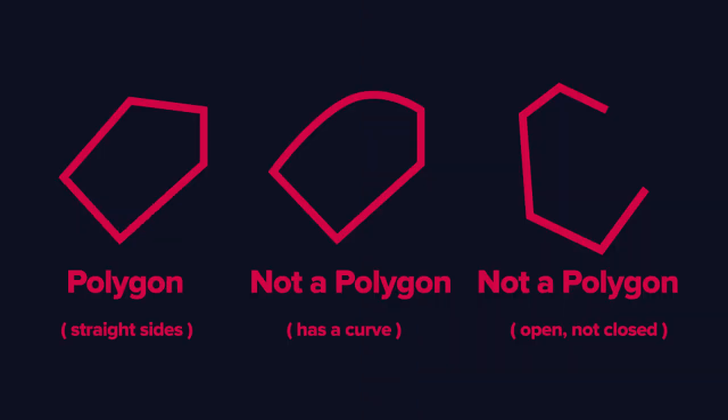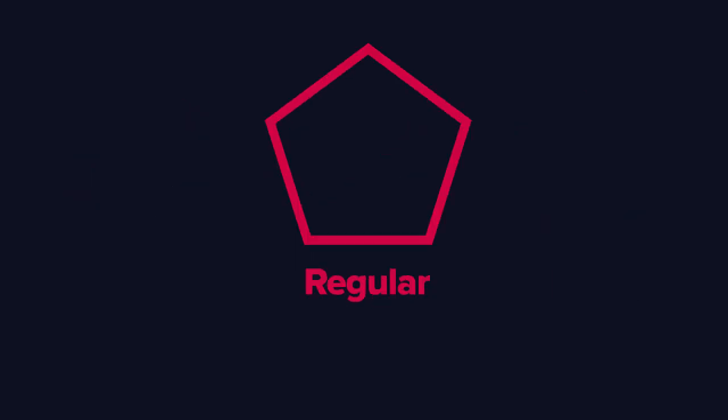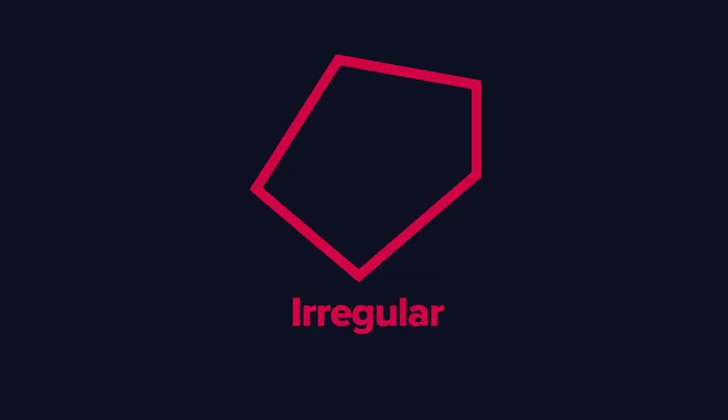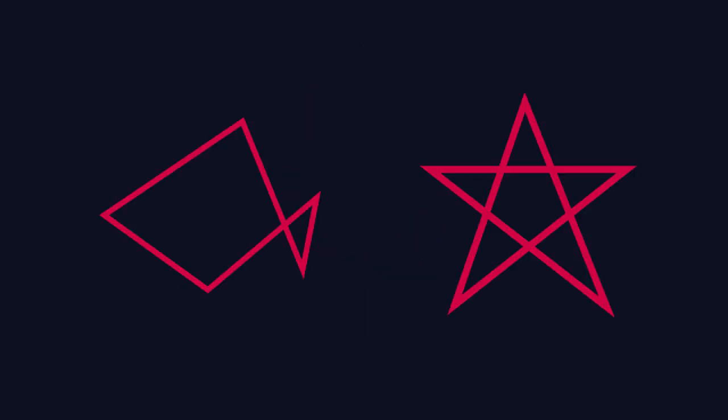Polygons are two-dimensional shapes that are made up of straight lines with all the sides joined up. They can be regular, with equal angles and equal sides, or irregular. They can even intersect themselves.